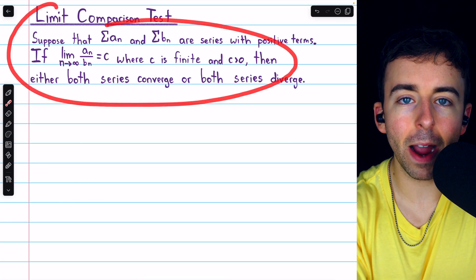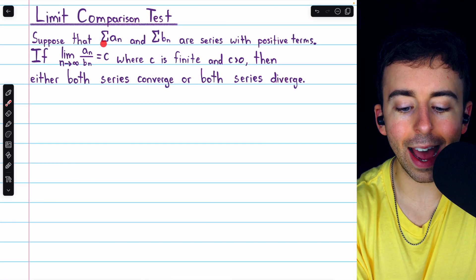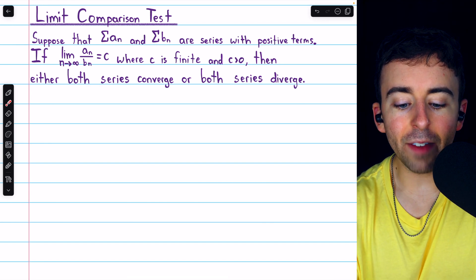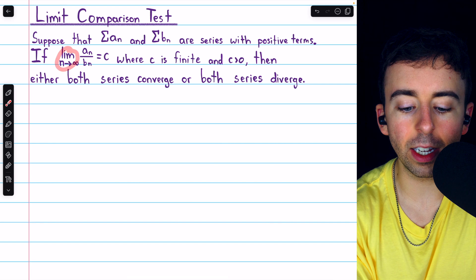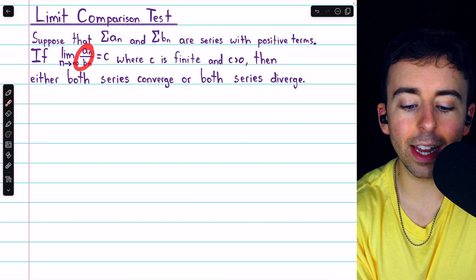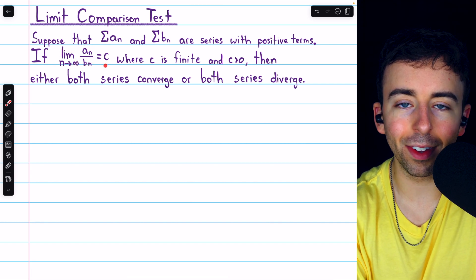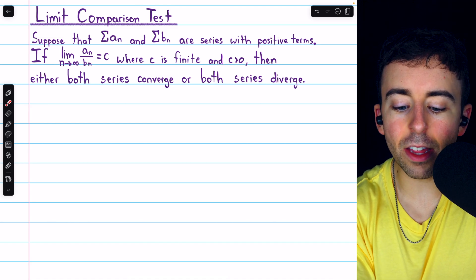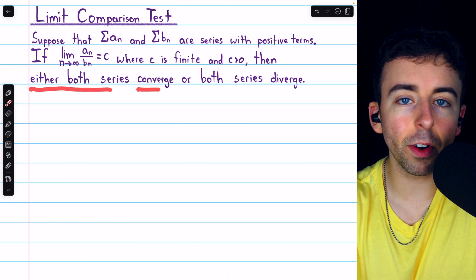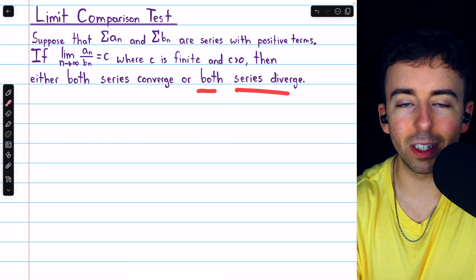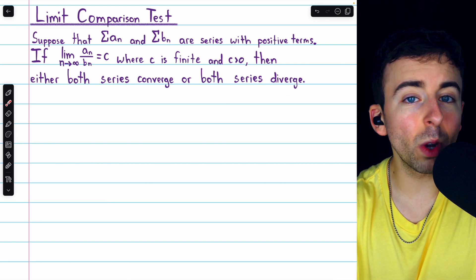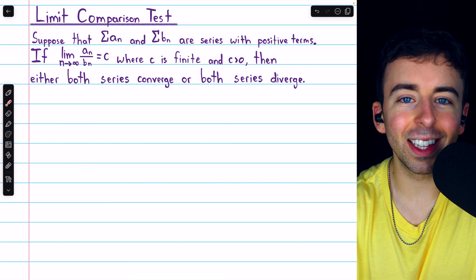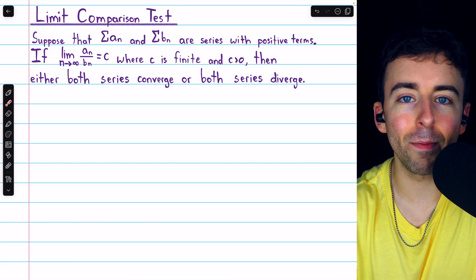We need a test called the limit comparison test. Suppose we have two series consisting of positive terms. If the limit, as n goes to infinity, of a_n divided by b_n is equal to c, where c is a finite positive number, then either both series must converge or both series diverge. So if the limit is some finite positive number, then the series must have the same behavior.